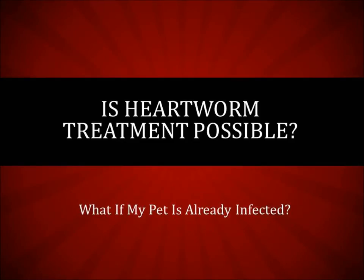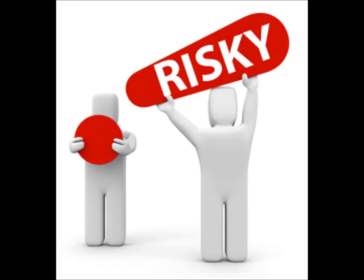Heartworm infection can be treated if your pet has been infected. It's done through chemical therapy if diagnosed early, usually through slow multiple treatments. That's because the chemical treatments are designed to kill the worms that are blocking the dog's blood flow, but killing all of the worms at once would create a complete blockage of the pet's heart and lungs, which would in fact kill the dog immediately. Remember also that the chemicals used in treating the worms are dangerous to your dog as well. So the high risk involved in treating heartworm disease is the reason why heartworm prevention is so important.